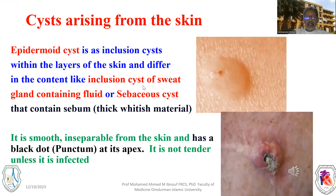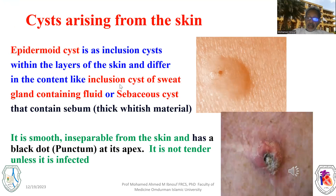First, the cysts in the skin layers, like the epidermoid cysts. The epidermoid cyst is an inclusion cyst. It arises inside the layers of the skin and usually it is different in contents. You cannot separate the skin over it — it is not behind the skin. You cannot grip the skin over it.